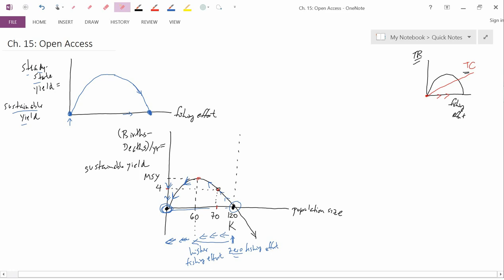We ended the previous video with the graph in the upper right. The horizontal axis is fishing effort, and the vertical axis is dollars. The black line is total revenue, the red line is total cost.